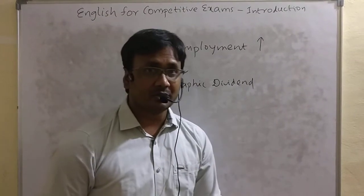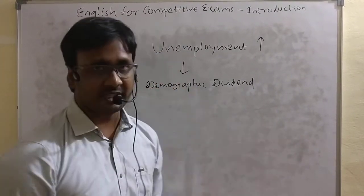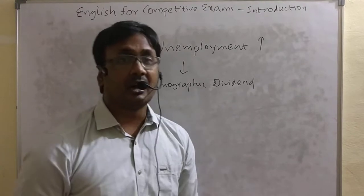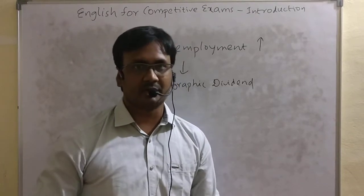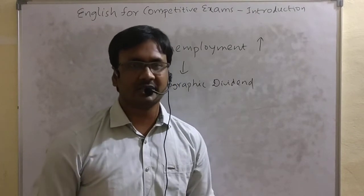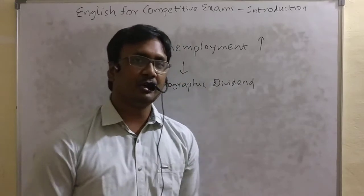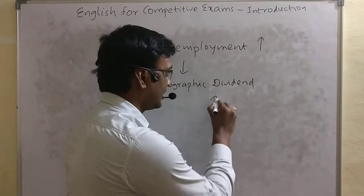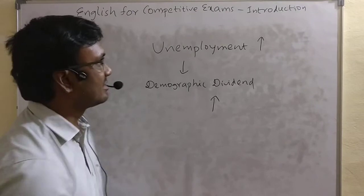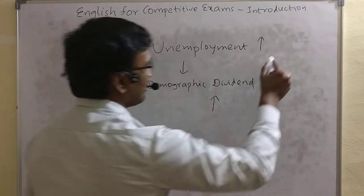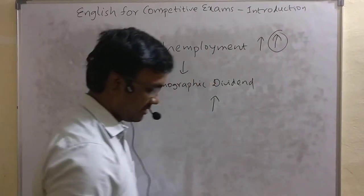But there is more bad news for us, because this demographic dividend — the share of working age population as part of the overall population — is only going to go up in the next 10 to 15 years, which means unemployment levels will also go up in the next 10 to 15 years.